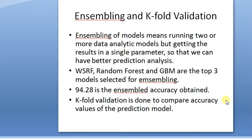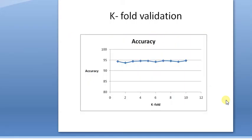Ensembling and K-fold validation. Ensembling is basically running two or more models and getting the result in a single parameter. The three best models are WSRF, Random Forest and GBM. The ensembled accuracy I have obtained is 94.28, which is really high. K-fold validation compares the accuracy over a number of runs by running the program a number of times, so we can actually be sure this is the range in which our accuracy lies.